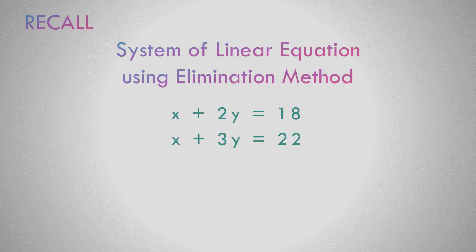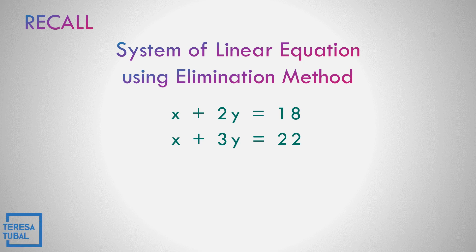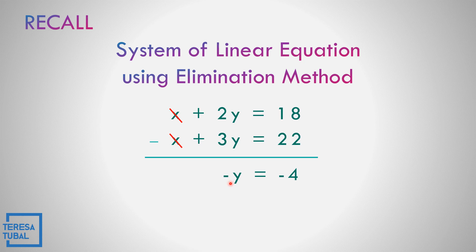Let us recall the system of linear equations using the elimination method. We need to eliminate x or y by having the same number. In equation 1 and equation 2, we eliminate x because we have the same number. If we subtract, that becomes 2 minus 3 equals negative y, and 1 minus 1 cancels x to 0x, and 18 minus 22 equals negative 4. To solve for y, divide both sides by negative 1, so y is equal to 4.